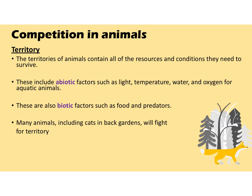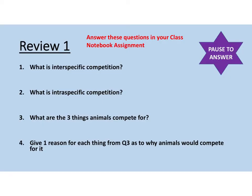The last thing that animals compete for is territory — the space where they live. Territories contain all of the resources and conditions an animal needs to survive, including abiotic factors such as light, temperature, water and oxygen for aquatic animals, and biotic factors such as food and predators. Many animals including cats in your back garden will fight for territory.